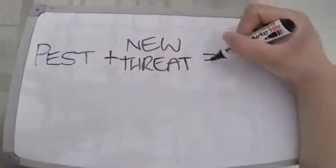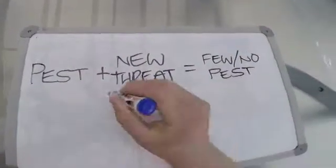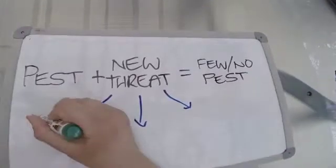In simpler terms, by adding a new threat such as disease, insect, or animal, if successful, can lead to fewer or no more pests.